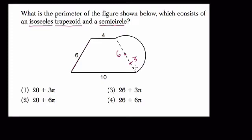We want to know what the perimeter is, so I want to leave the radius out of it. It's not going to be useful to me. Here, the perimeter is going to be 10 plus 6 plus 4, or 20, plus the semicircle.